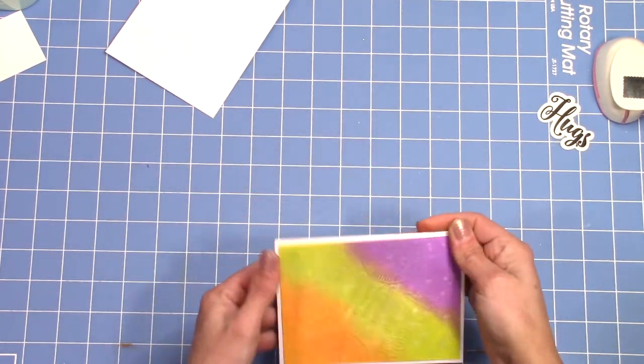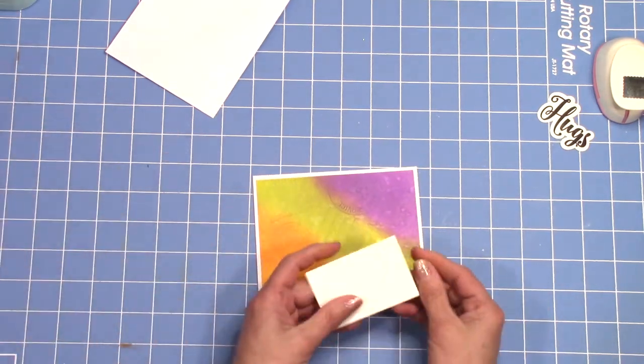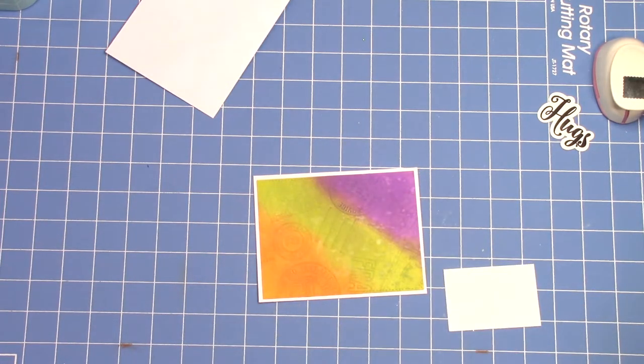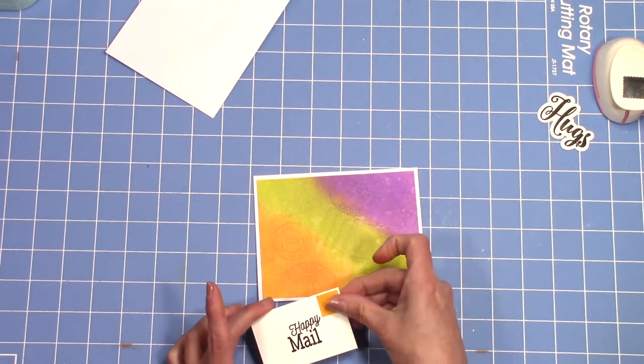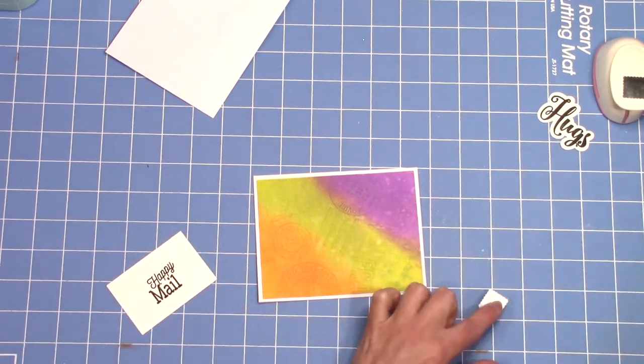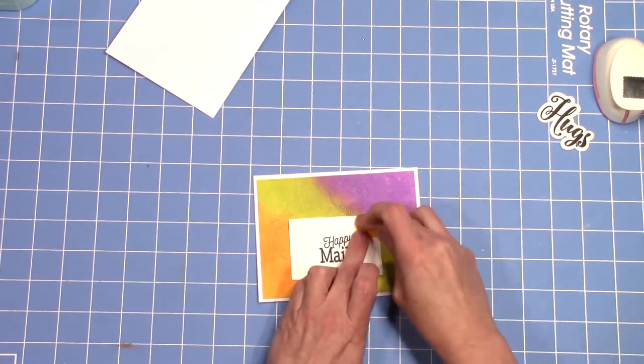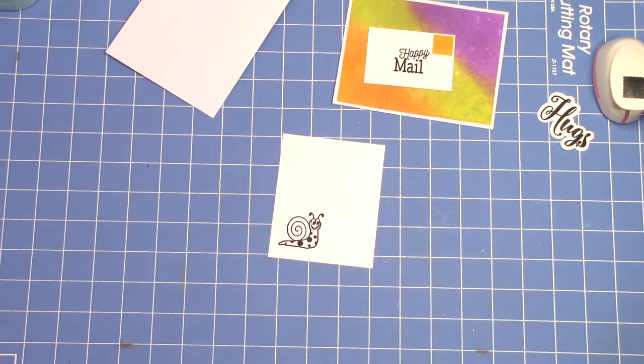We're going to use hugs on this one and cut that out. I also used a stitch rectangle die to cut out my panel and we're going to attach our panel to our card base. This is just a 2x3 piece of white cardstock that I'm going to use as my little piece of mail. I'm going to put my stamp on it and I also am going to stamp a heart which comes on that stamp set right in the middle of that little postage stamp.